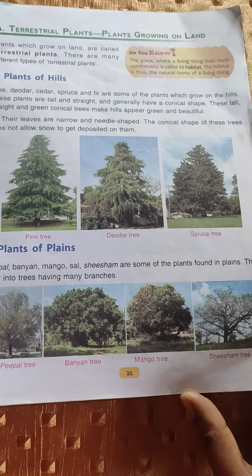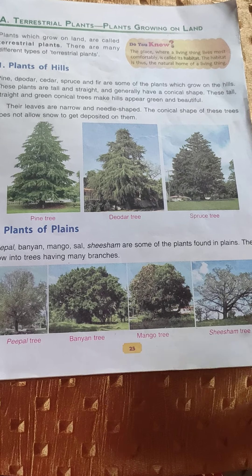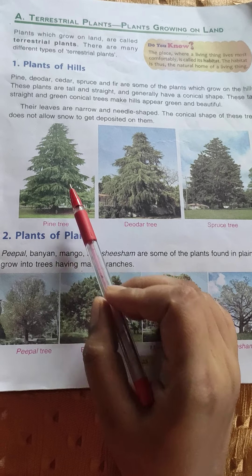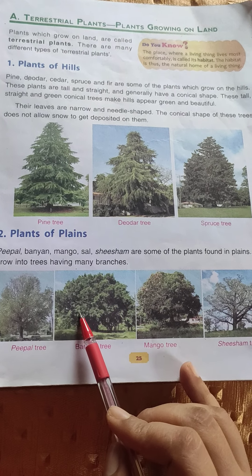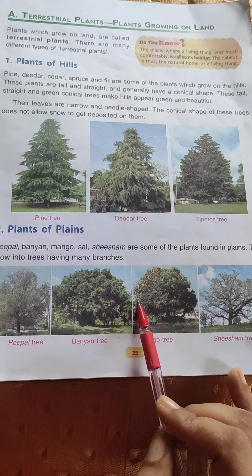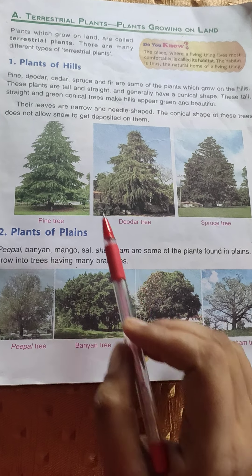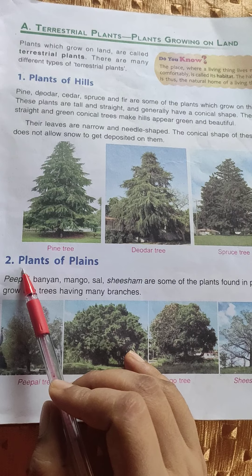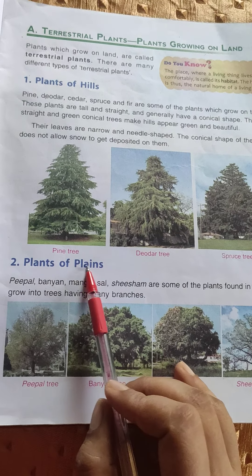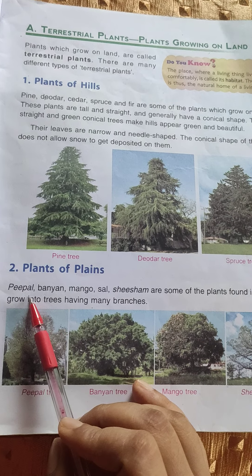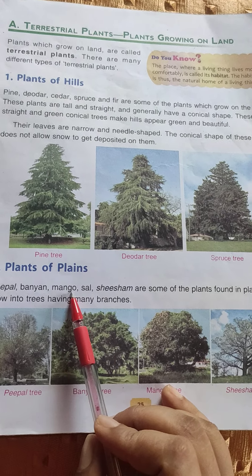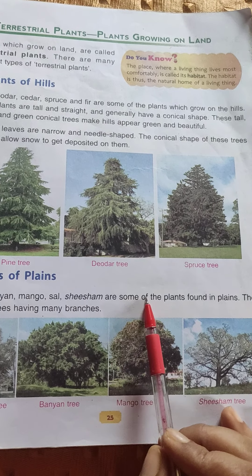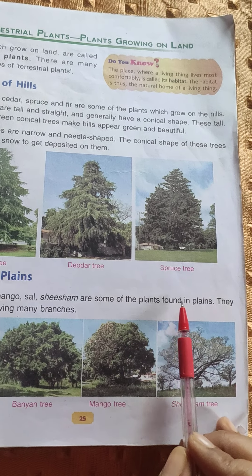Now we can find the difference between plants of plains and plants of hills. Plains plants are almost round in shape, while hill plants are conical. Plants of plains include pipal, banyan, mango, sal, and sesame.